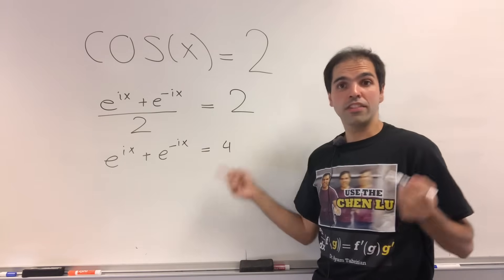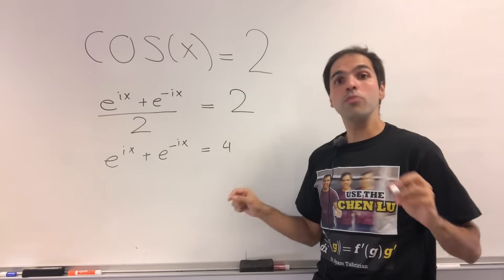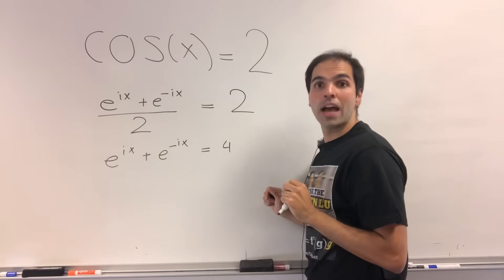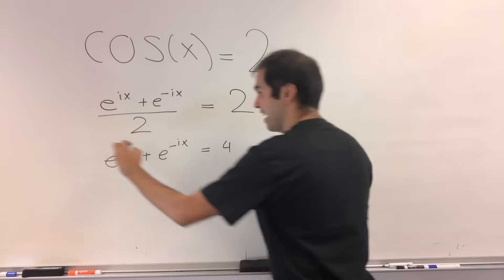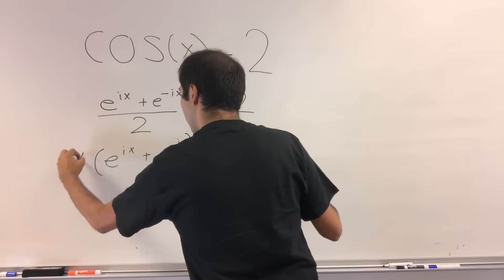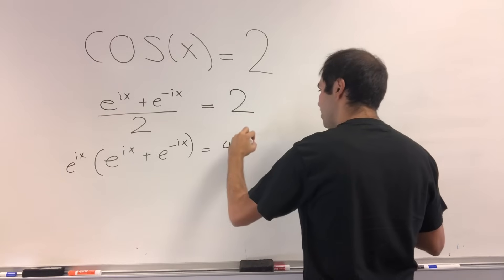And it turns out this will become an equation that you will be able to solve. Because let's multiply both sides by e to the ix to get rid of this negative side.